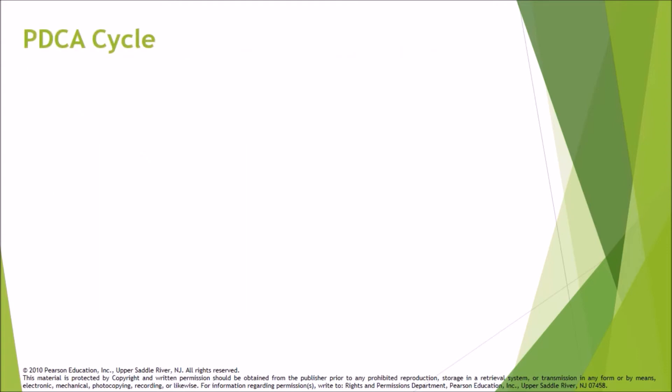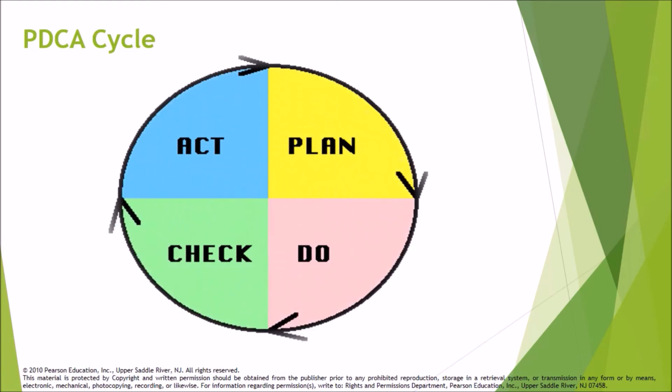PDCA cycle — Plan, Do, Check, Act — is an iterative four-step management method used in business for the control and continuous improvement of processes and products.